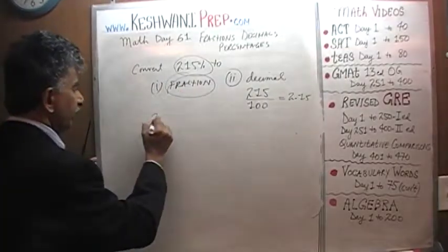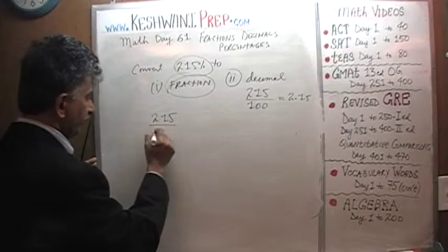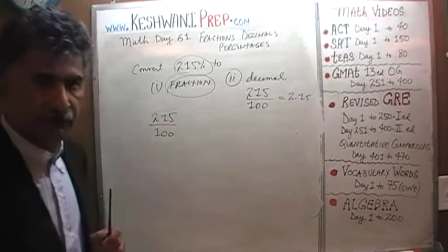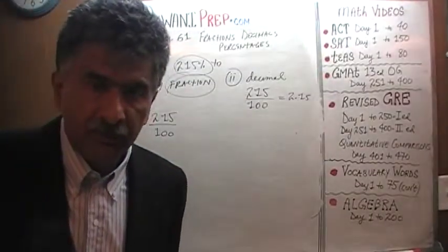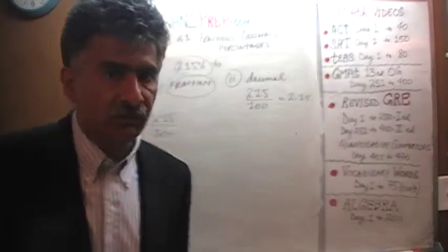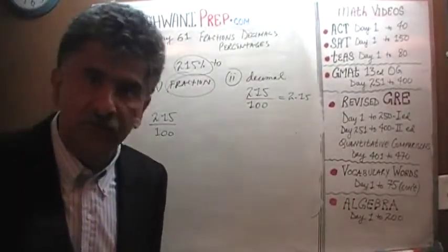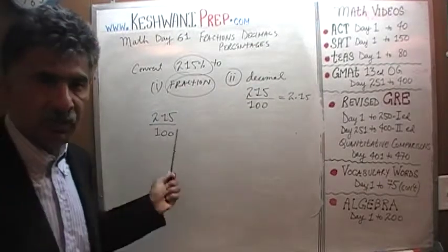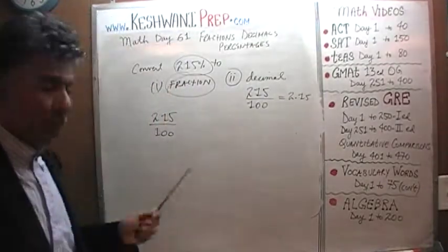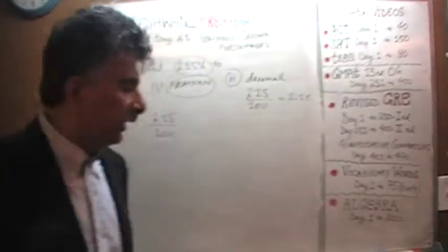When you want to convert into fraction, it's the same exact thing. 215 over 100, except the only complication is that in the exam, the answer choices are not going to be presented to you like this. They're going to be presented in the reduced form. So we just have to go one more step and reduce the fraction. 215 ends in a 5 which means 215 is a multiple of 5. 100 is a multiple of 5. Let's divide top and bottom by 5.